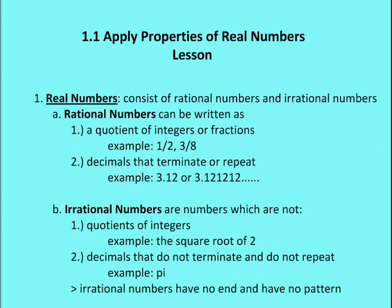So what is a real number? A real number consists of both rational numbers and irrational numbers. Those are the two subsets.